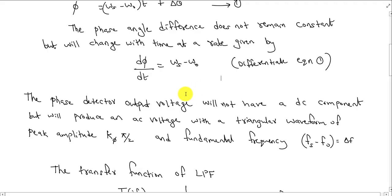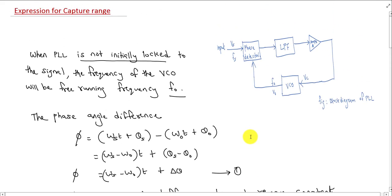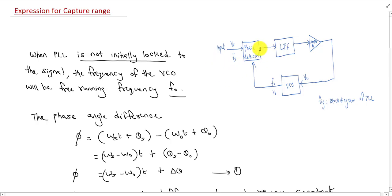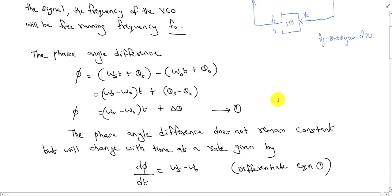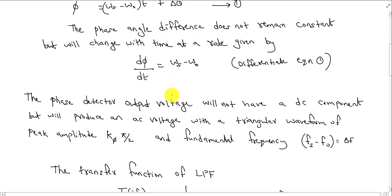That is, a triangular waveform with amplitude k5 * pi/2. So our phase detector output will have an output with amplitude k5 * pi/2. And that frequency value will be equal to Fs minus F0 — that is the frequency component Fs minus F0.